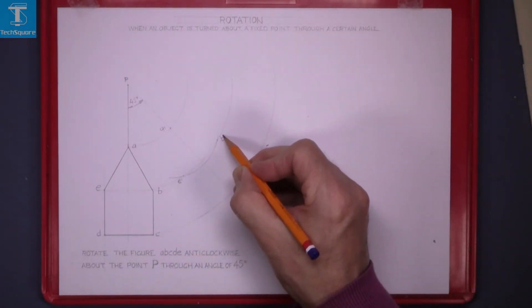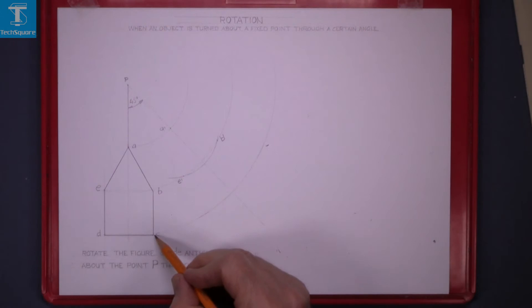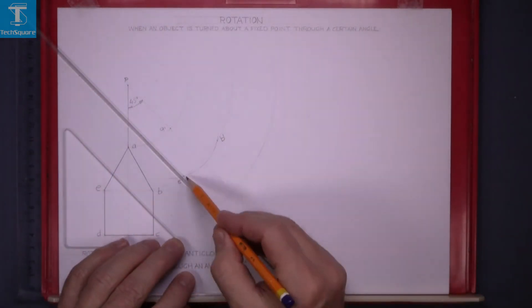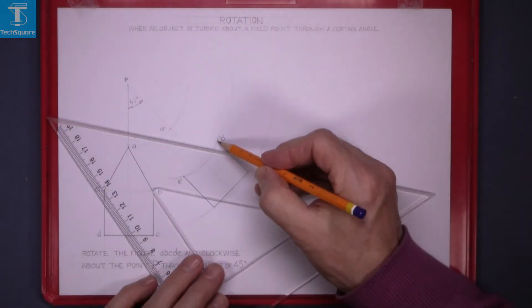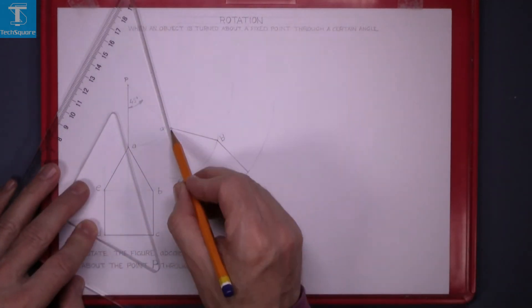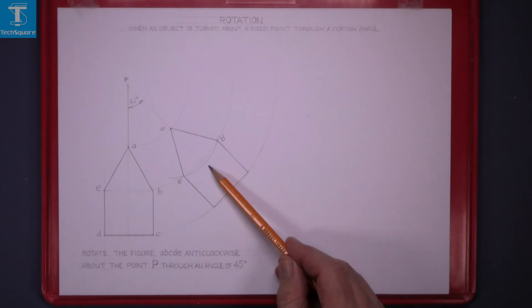Now to get D and C, just draw down at 45 degrees from the other two points and that's the figure. And that's the image of this figure when it's rotated anti-clockwise about point P through an angle of 45 degrees.